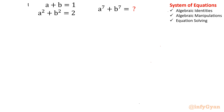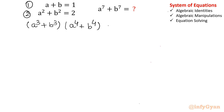This is equation 1, this is equation 2. Now I am writing one algebraic identity: (a³ + b³)(a⁴ + b⁴). Why am I writing this? Because our target is a⁷ plus b⁷. So how can we find the 7th power? That is possible: once I multiply a³ with a⁴, I get a⁷, and b³ with b⁴ gives b⁷. So let us multiply.